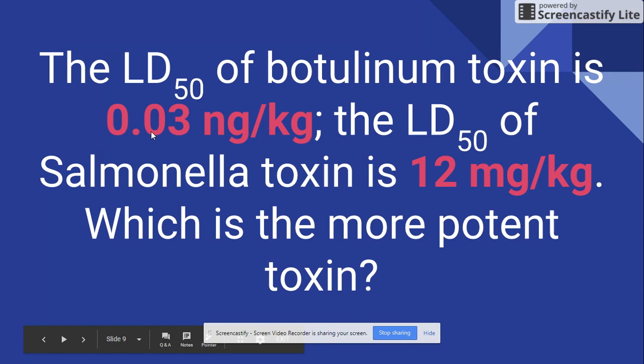First you look at the numbers, but most importantly you have to look at the units. We have nanograms compared to micrograms — nanograms are a lot smaller than micrograms, so that's a smaller total amount. Even if the numbers were both 0.03, the nanograms would be more potent than the micrograms because the microgram is a bigger unit. It would be like saying 0.03 cups versus 0.03 gallons.